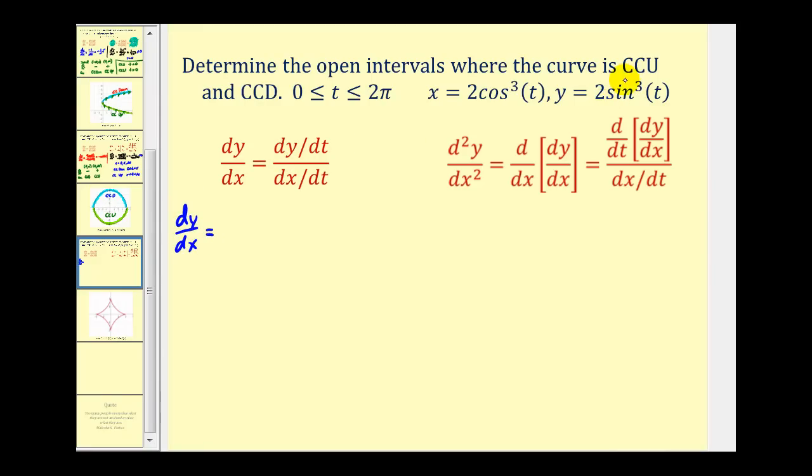We'll do dy/dt. We do have to apply the chain rule like we did in the last video. We're going to have six sine squared t times cosine t divided by dx/dt, which will be six cosine squared t times negative sine t. And this simplifies nicely to negative tangent t.